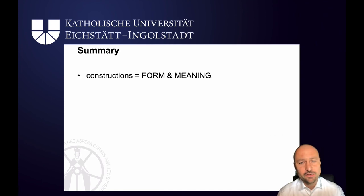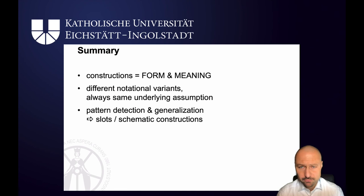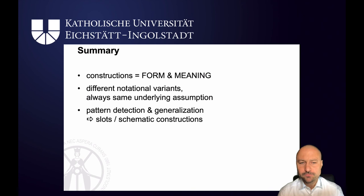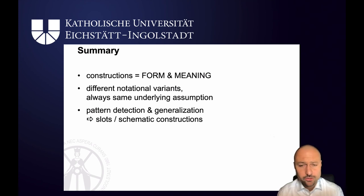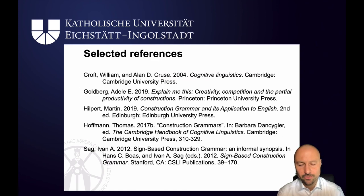Summing up: constructions are form and meaning pairs. There are different notational variants, and some of them look really complicated, but at the heart of them they've always got the same underlying assumption. Moreover, form isn't just phonological information. Because of pattern detection skills, we can generalize — we can have slots, as in untrue, unfriendly, unhappy — so 'un-adjective' — and undo, untie, unlock — so 'un-verb'. We see these patterns and create slots, which give us so-called schematic constructions, which allow us to be productive. Last time we saw an example of the 'un-guchi' construction — a child used the un-adjective construction to create a new item. How this exactly works we will flesh out in the session on usage-based construction grammar. Thanks again for your attention. See you next time.